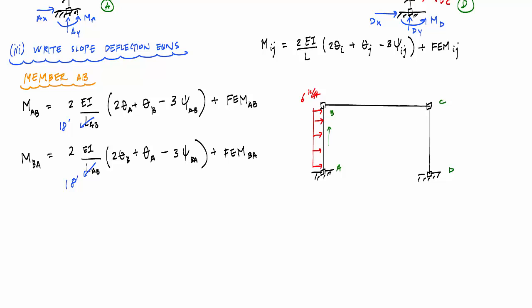And if I look at the boundary conditions, I know that the rotation of joint A is going to be zero because it's fixed. So θ_A is zero. And now what's left is this chord rotation ψ_AB or ψ_BA and these fixed end moments.